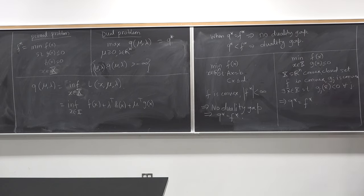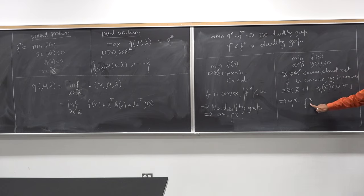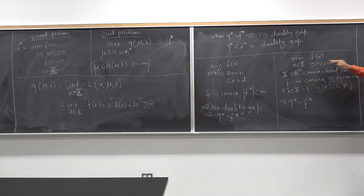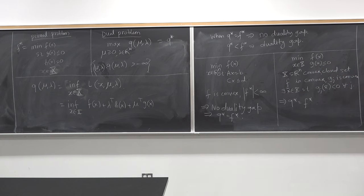Remember that when you have no duality gap, it is very easy for you to come up with a certificate of optimality. If you can look at Q of mu_k and f of x_k, and if the difference between them is small, you are very close to the optimal solution. Otherwise you are far away. If you have a duality gap, that number could be very large or very small and there is no way for you to know whether you are close to the optimal solution or not. Ideally, you always want to transform a complex optimization problem into some other approximate convex optimization problem so that you have no duality gap and can solve it easily, which would be an approximately optimal solution to your original problem. That's typically the recipe for solving very complicated optimization problems.